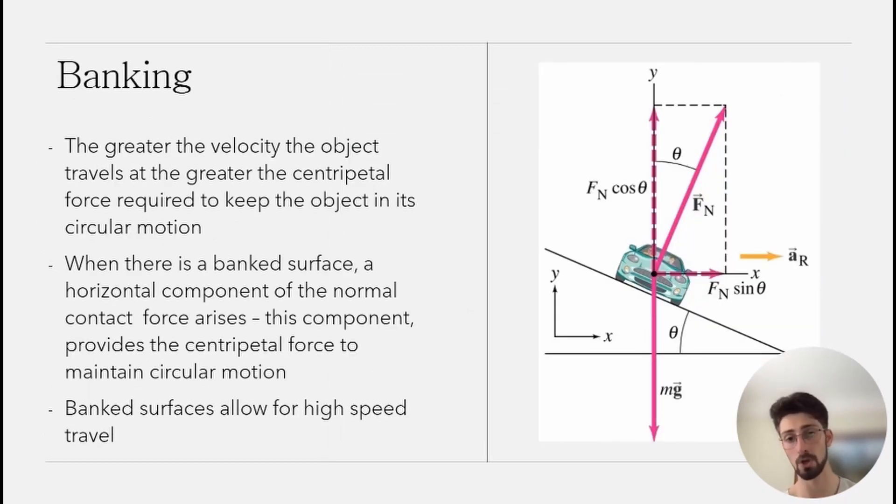That is quite important and it's something that is shown nicely in the diagram here. We can see that the friction is what provides this horizontal component of the normal contact force. We also see the acceleration—the centripetal acceleration—is acting in the same direction as the horizontal component of the normal contact force, which is effectively our rate of change of velocity. That diagram really helps things become a little bit clearer. The reason banked surfaces are so useful is because they allow for much higher speed travel, because that component of friction becomes a little bit more—it increases in magnitude.